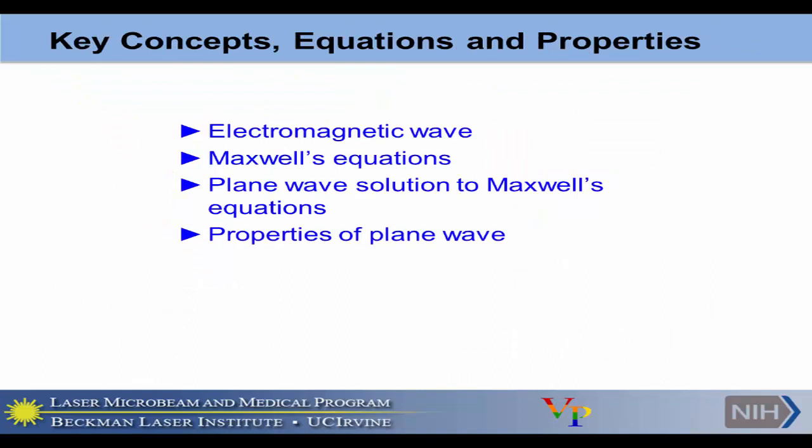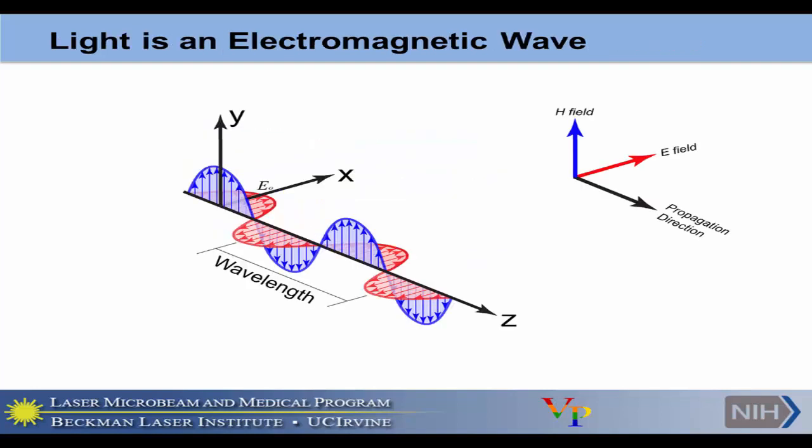I'm going to talk about electromagnetic fields, Maxwell's equations, and plane waves. Light is an electromagnetic field — it has an electric field and a magnetic field which are perpendicular to each other, and the propagation direction is perpendicular to both. The distance between two peaks is known as the wavelength.